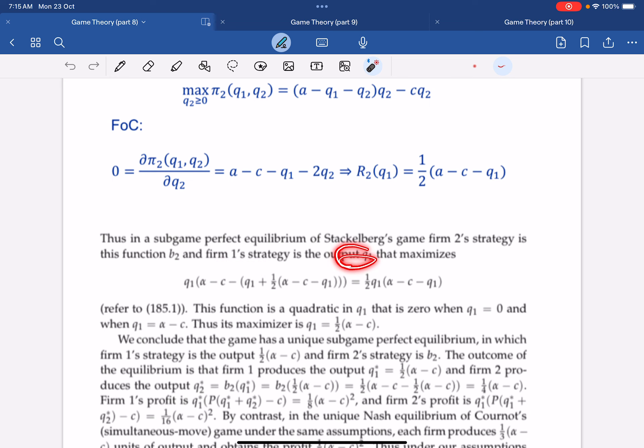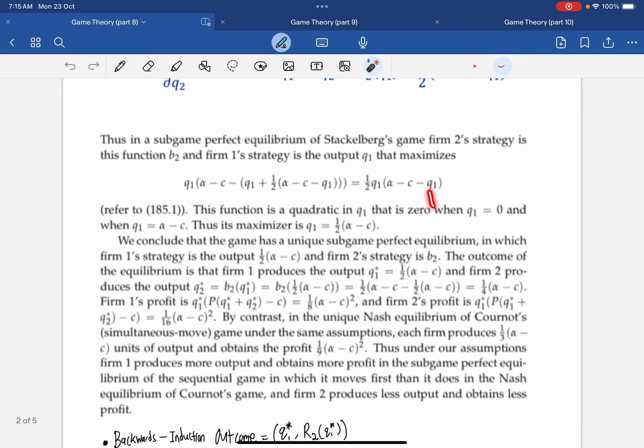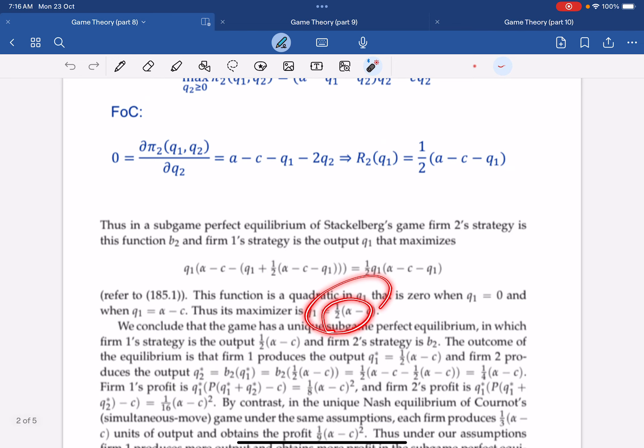We again partial differentiate this with respect to Q1 now and equal to 0. Then, the maximizer will be Q1 equals to half A minus C. And so, the unique subgame Nash equilibrium is when Q1 produces half A minus C and Q2 produces this best response function to Q1. And this best response function will be just taking whatever this Q1 is and subbing it into here.